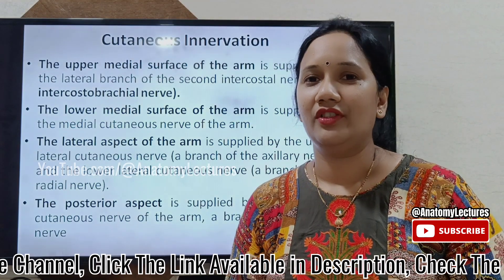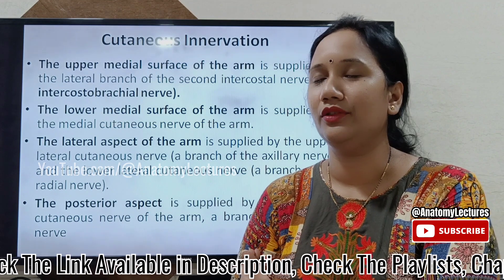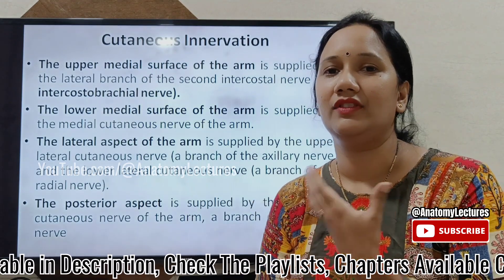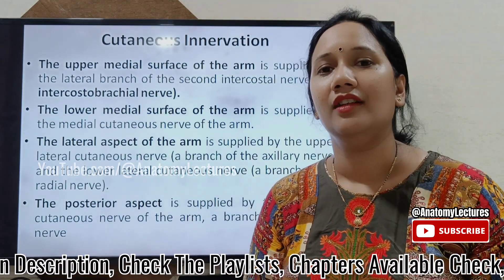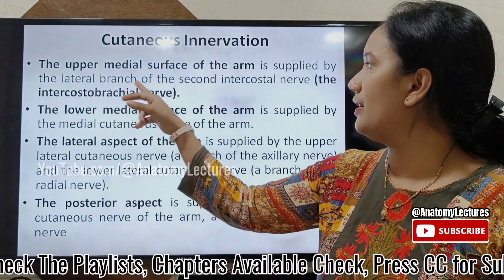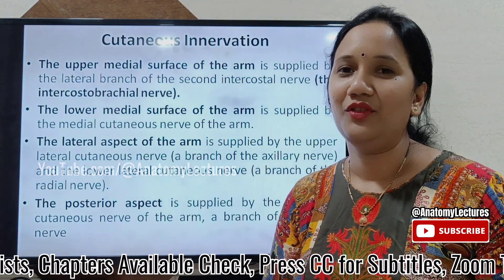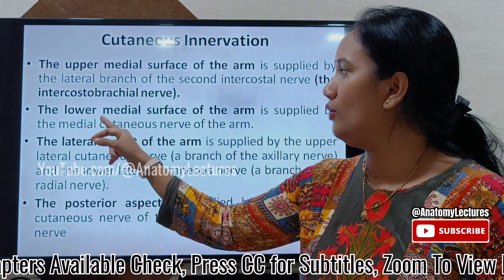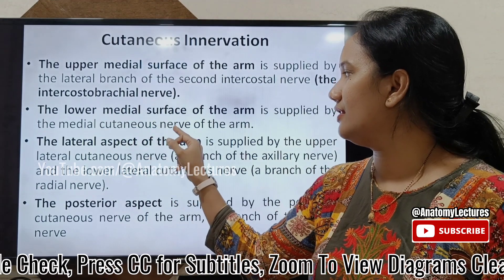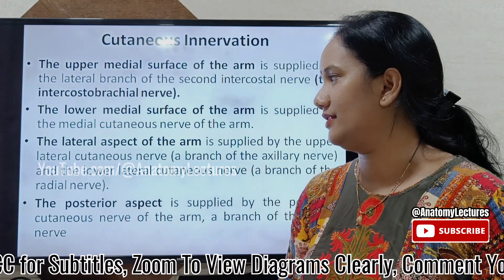What is the cutaneous innervation of the arm? The front of the arm is divisible into a lateral part and a medial part. The medial part is further divisible into an upper medial part and a lower medial part. The upper medial part is supplied by the lateral branch of the second intercostal nerve, also called the intercostal brachial nerve. The lower medial surface is supplied by the medial cutaneous nerve of the arm, which is a branch from the medial cord of the brachial plexus.